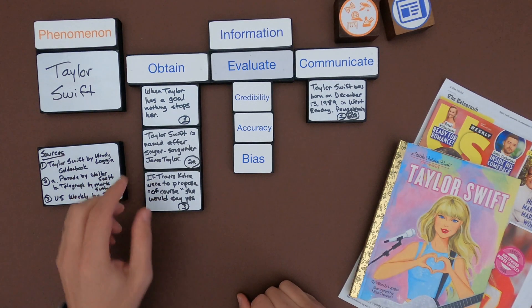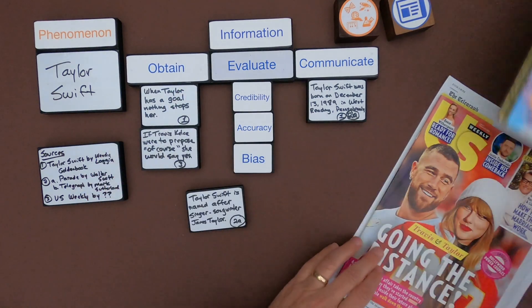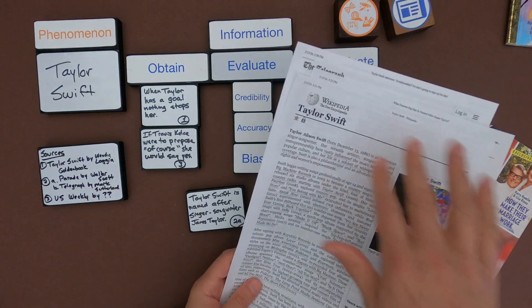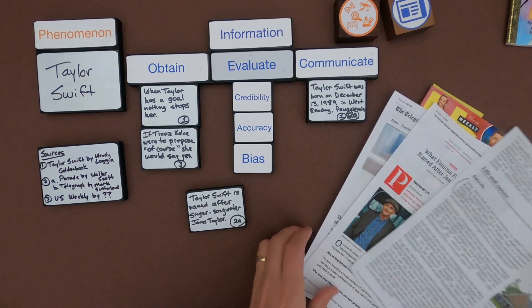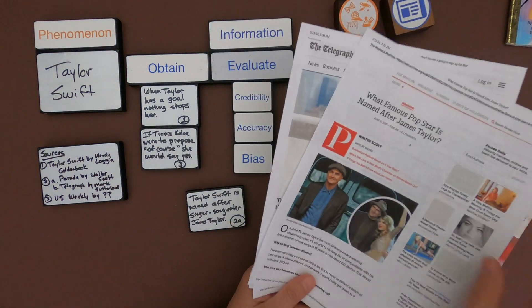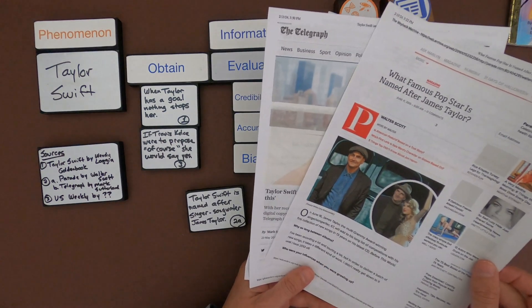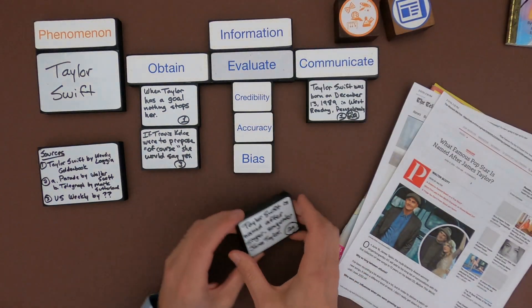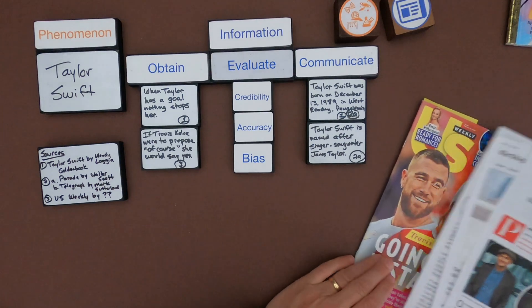If we look at the next one, Taylor Swift is named after singer-songwriter James Taylor. If we look at that, well, where does that come from? We'd have to look at these other sources. So it's in Wikipedia, which is going to have people looking over it. But also there's different citations. So if we look at those citations, James Taylor, the singer-songwriter, is actually interviewed and said he thinks that's interesting. And then we have an interview with Taylor Swift herself. And so I think these are going to be more credible. And so I'm going to move this over into communicate.